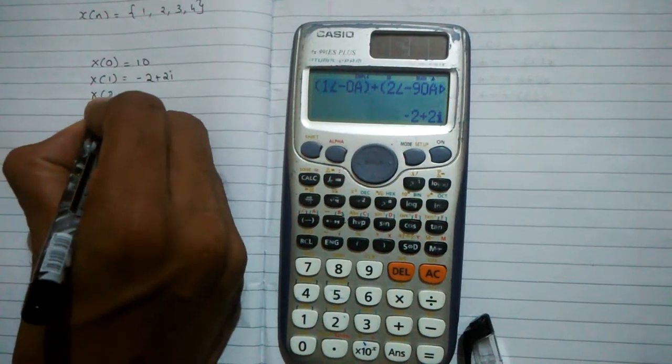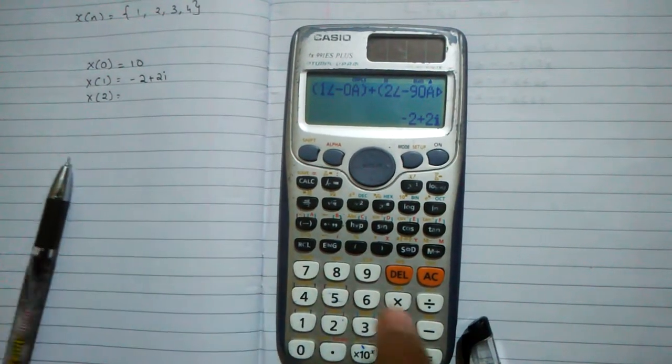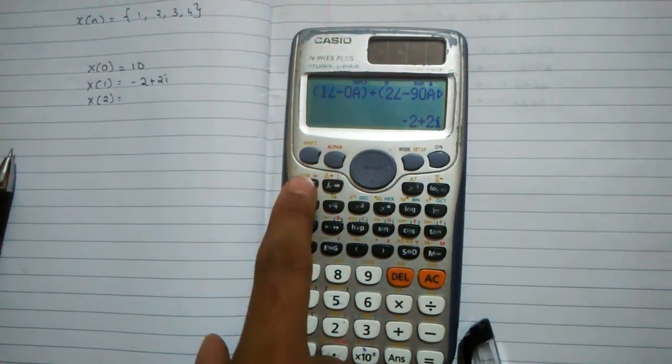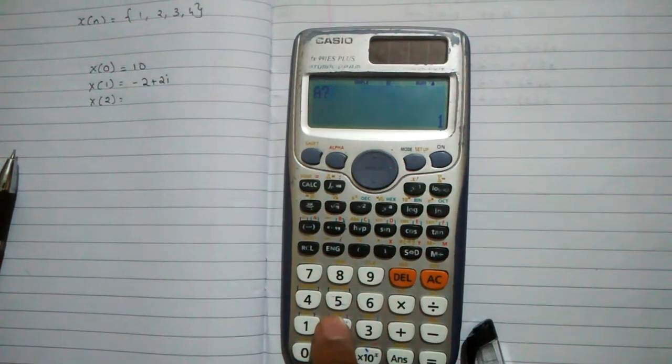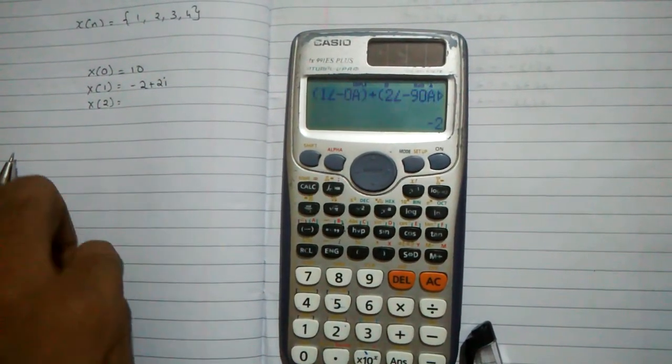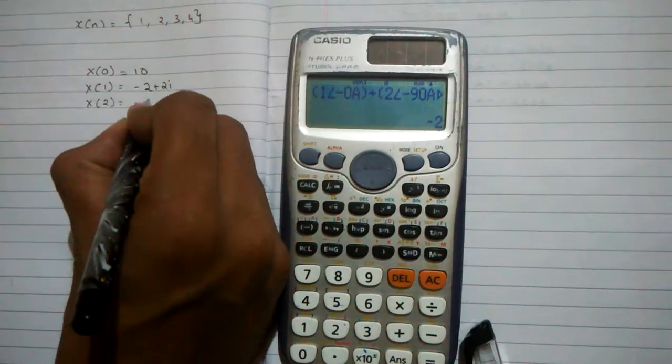Next value that we have to find is x of 2. To find x of 2, hit calculate again, then plus 2 and equals. x of 2 is equal to minus 2.